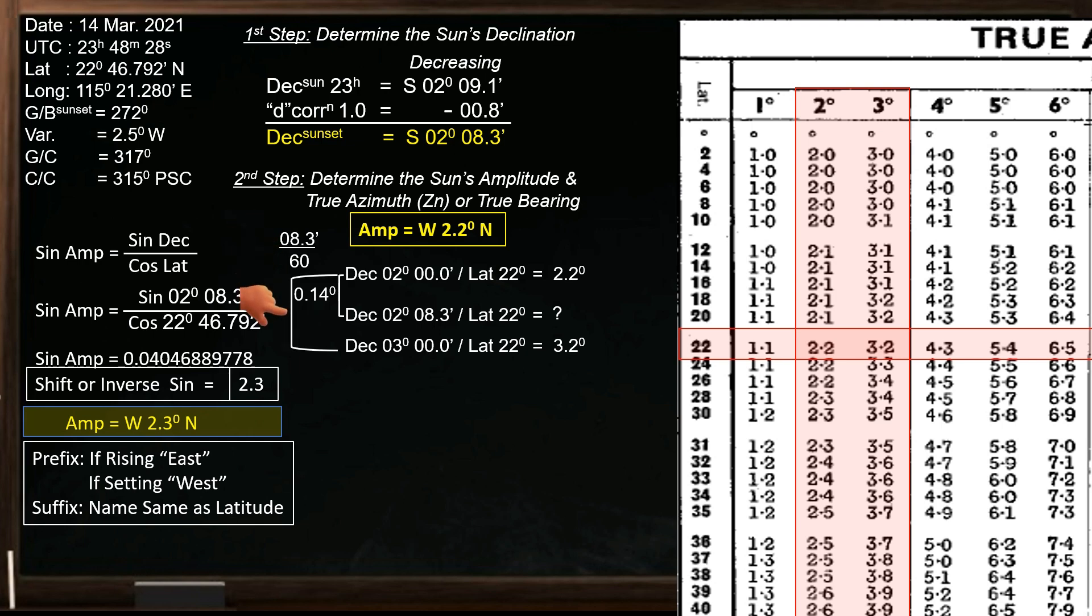Next, the difference between declination 2 and 3 degrees is 1 degree. On the other side, let this difference be x, our unknown. And the difference between these two amplitudes is 1 degree. So we now have 0.14 divided by 1 degree equals x divided by 1 degree.